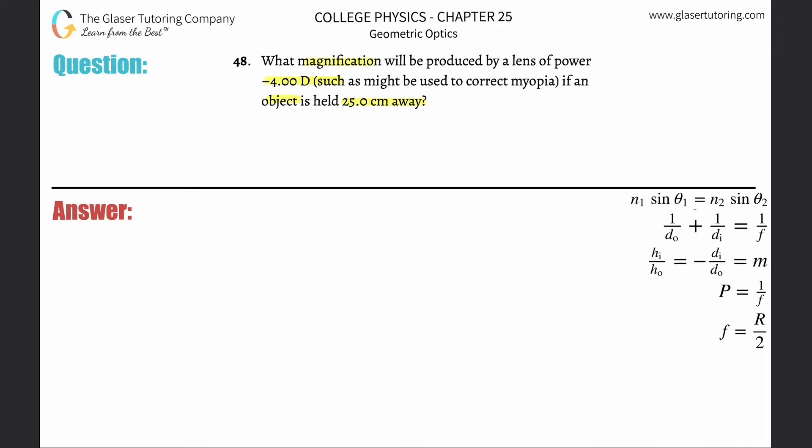It's talking about an object being held 25 centimeters away, so we're going to use image distances and object distances relative to the lens. So -di over do will equal m, which equals the magnification. I need to know two things.